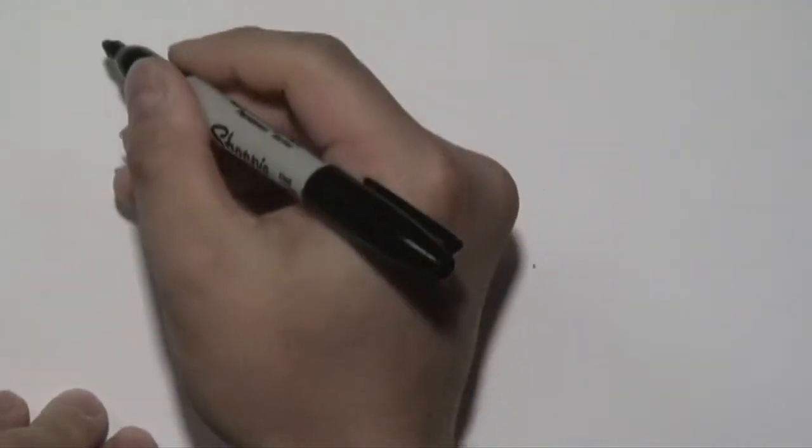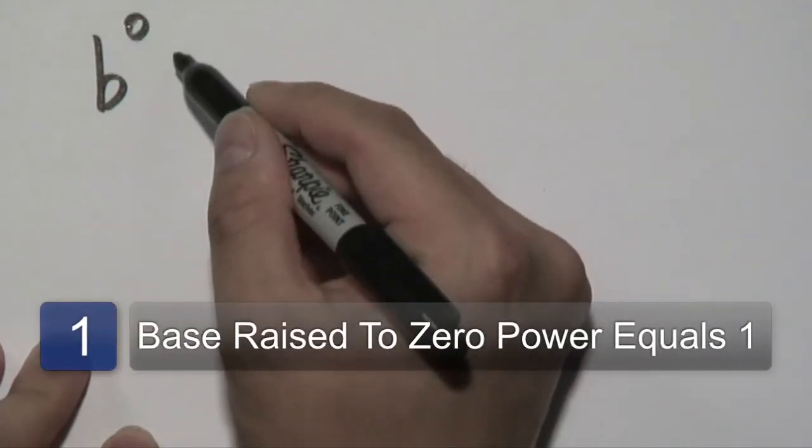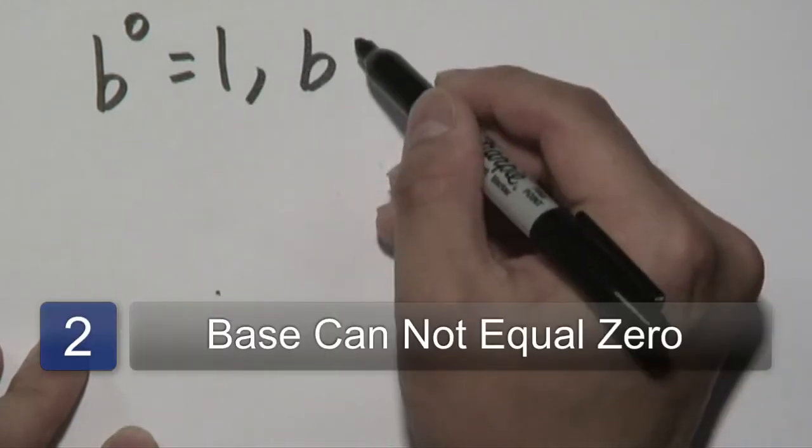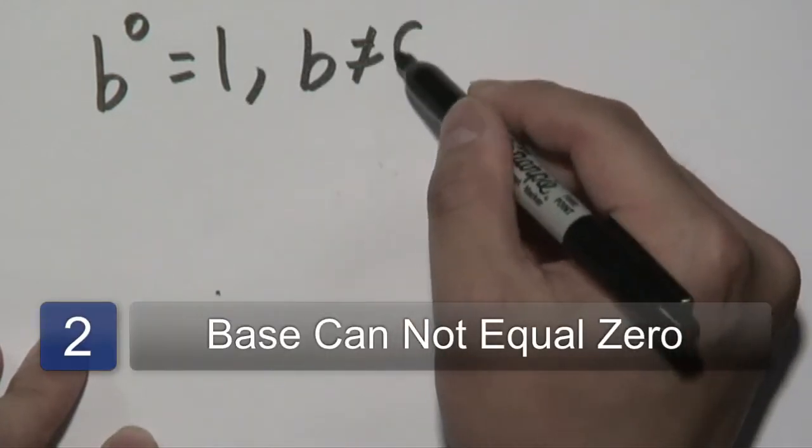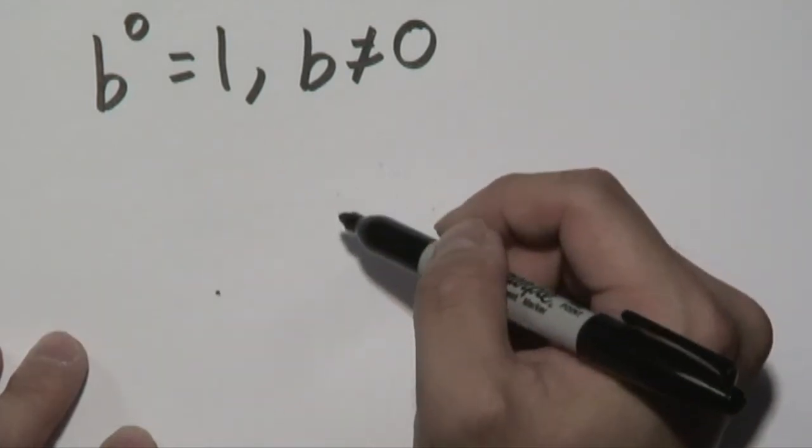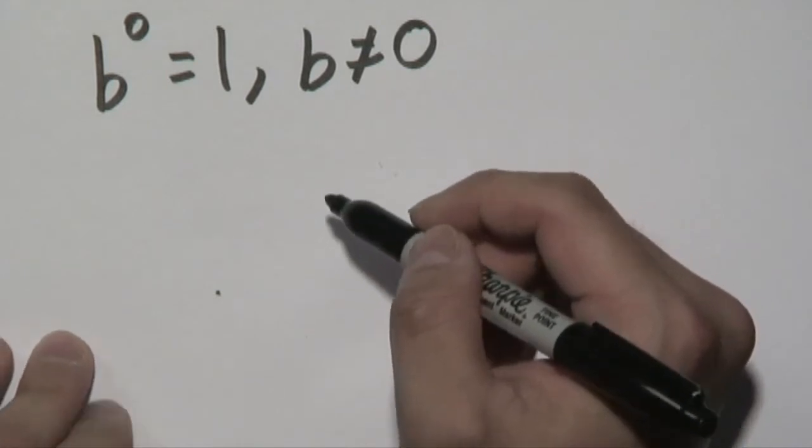So we're going to talk about a few examples right now. Now the rule about zero exponents is if you have a base raised to the zero power, it will always give you one. Now we'll talk about the condition in just a minute, but the only exception here is that the base itself cannot be zero. In other words, zero to the zero does not happen for this particular rule. It's not equal to one, but we'll talk about it in a minute.